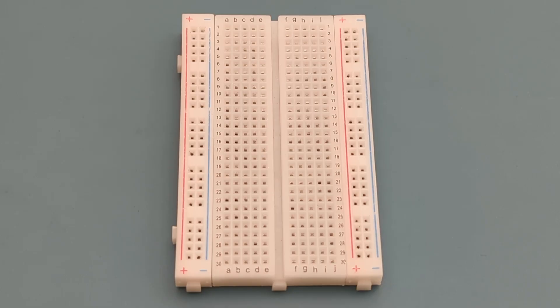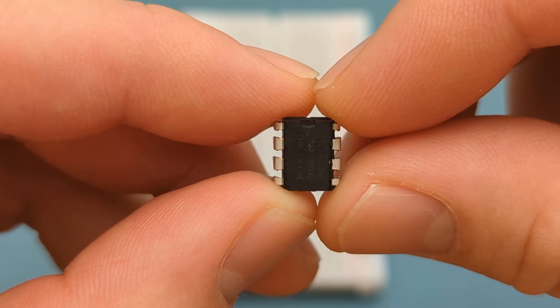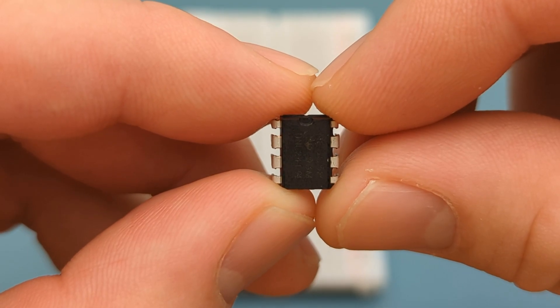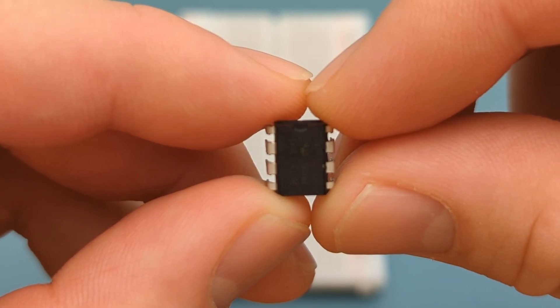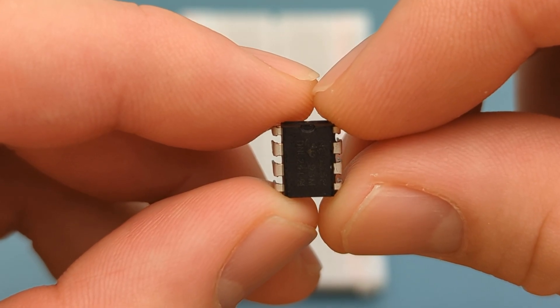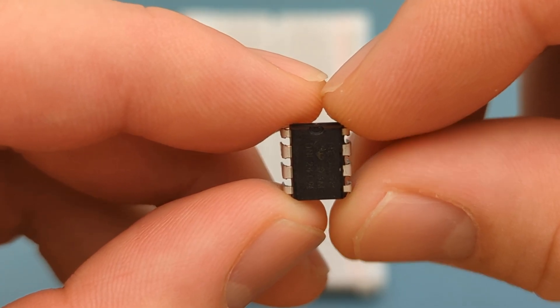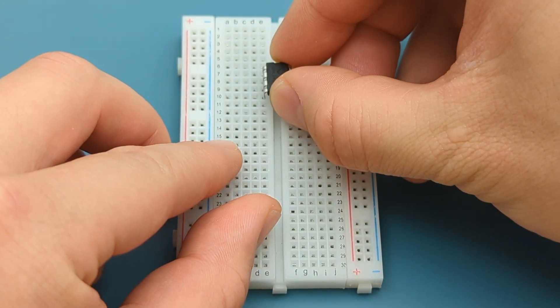Let's set up the circuit step by step. Begin by positioning the 555 timer IC on the breadboard. The pins are numbered counterclockwise starting from the top left corner. Refer to the circuit diagram if you have questions. Insert the 555 timer in the middle of the breadboard.